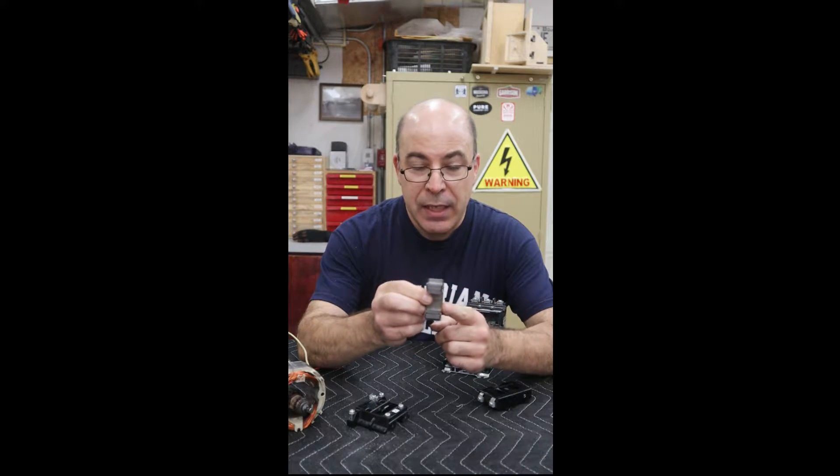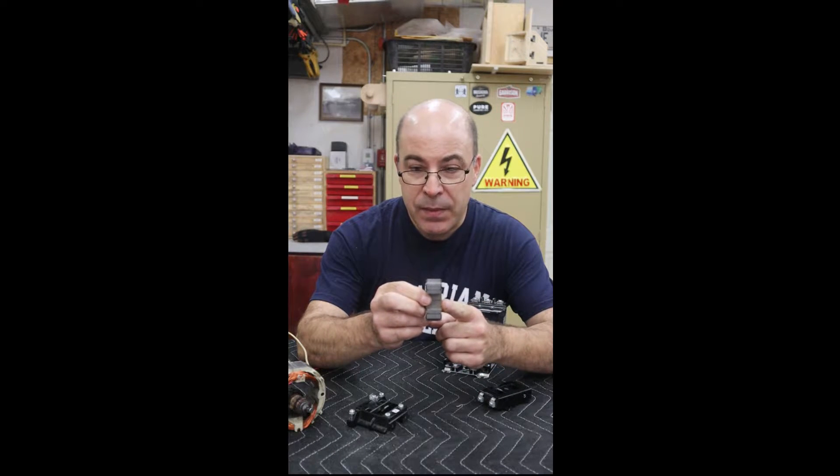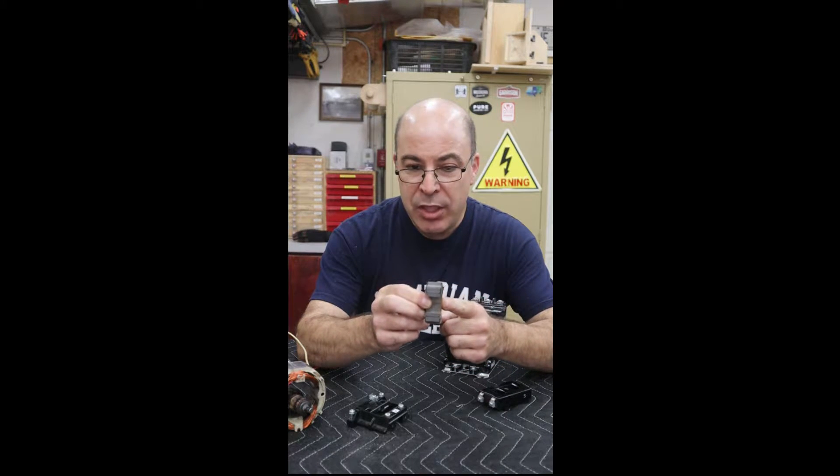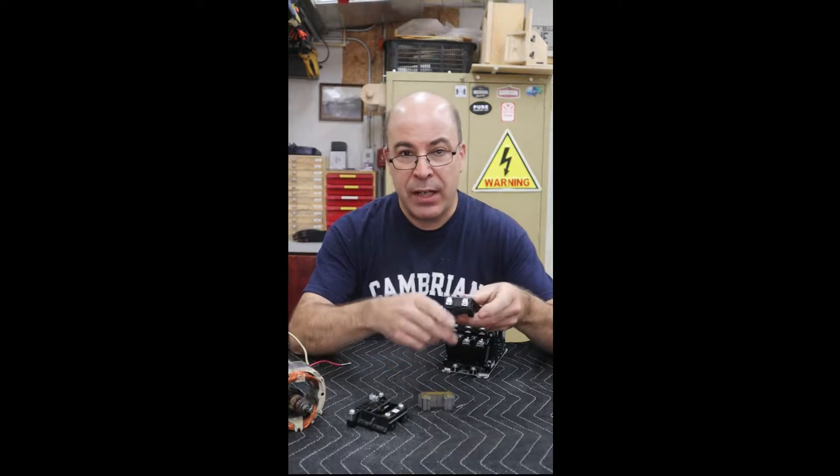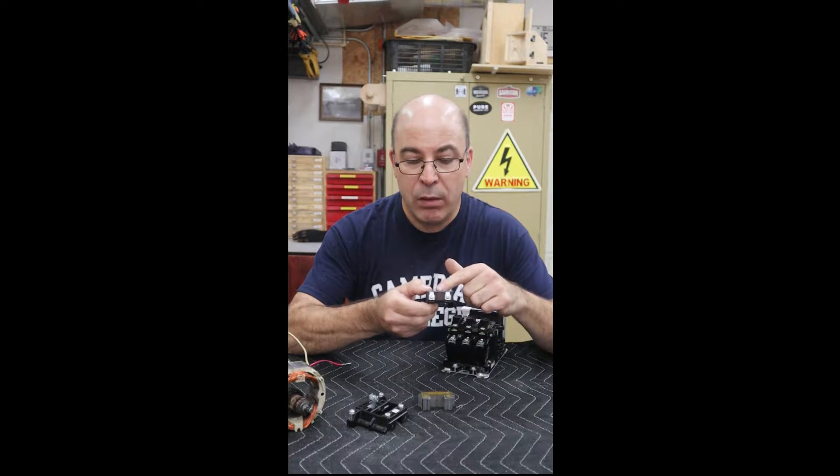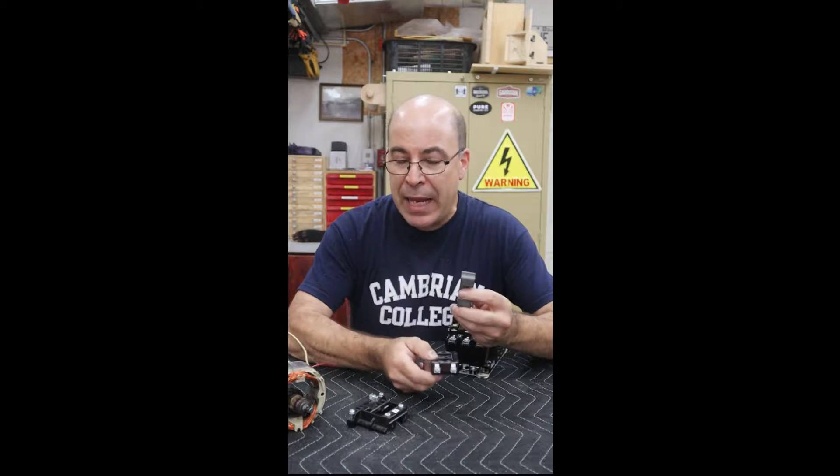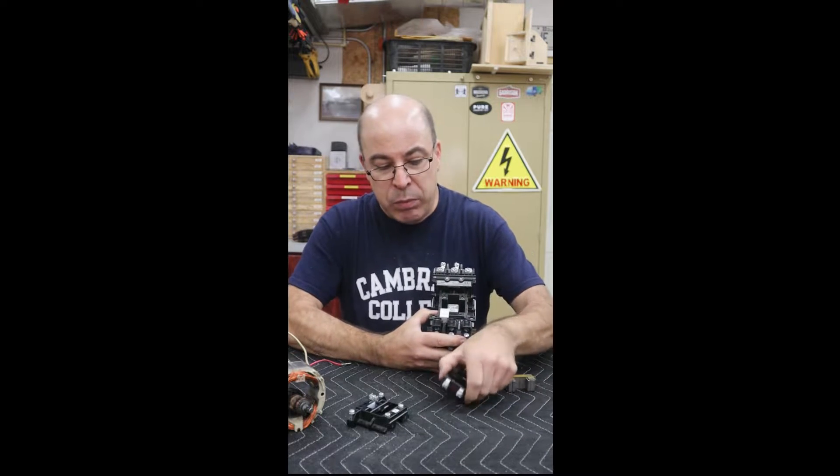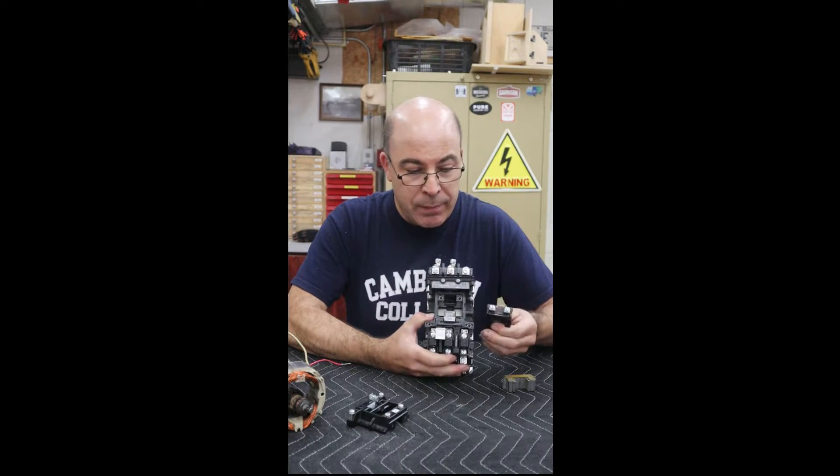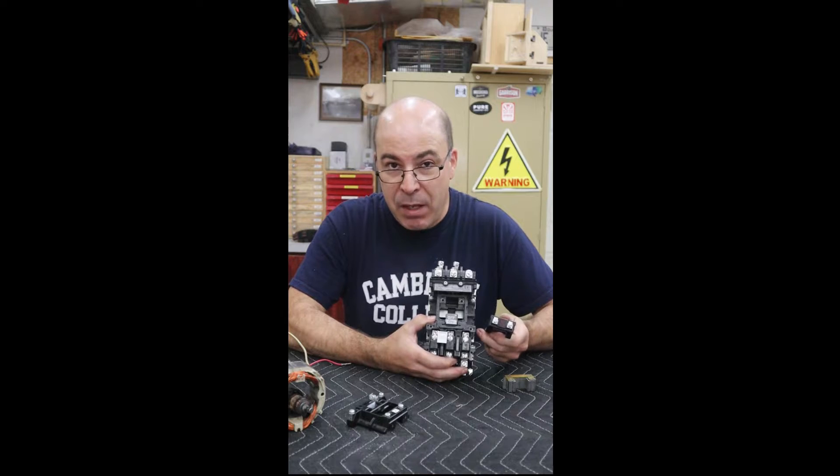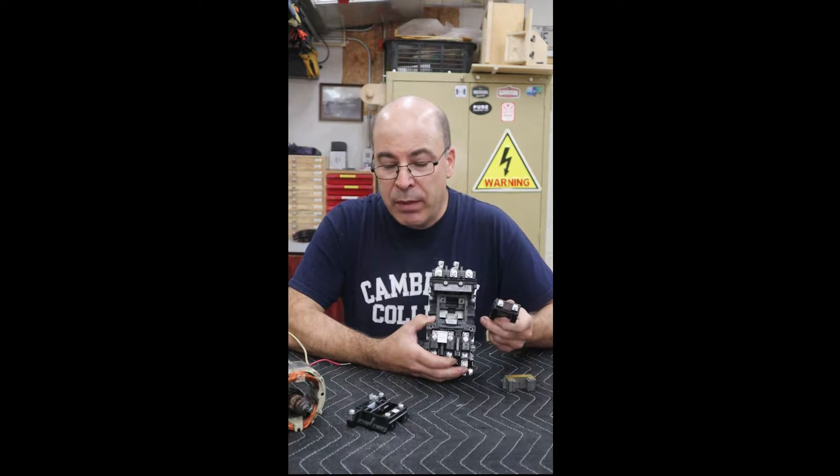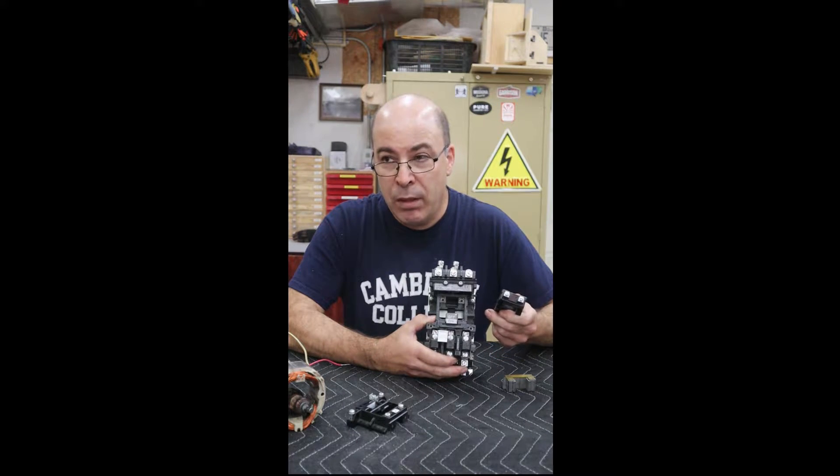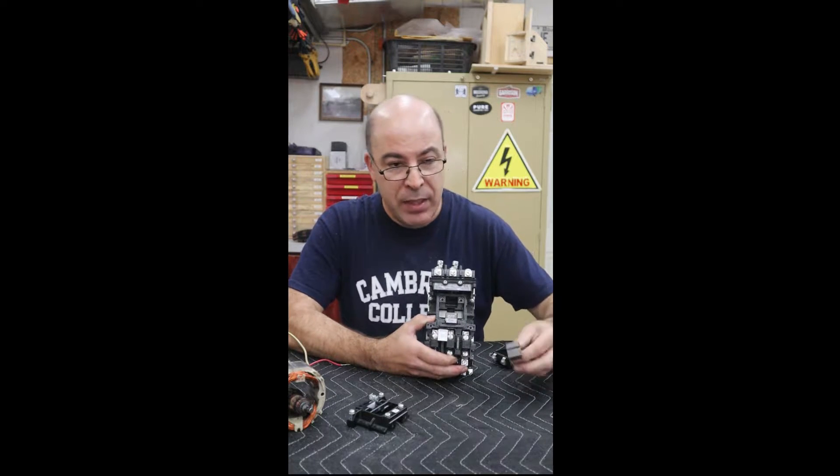The reason being is if we did not do this, when we had the machine running and we were actually running alternating current through this coil, this steel if it was solid would actually heat up and eventually the contactor would get so hot that the plastic would start to melt. This is one of the critical areas of why we have to use laminated steel.